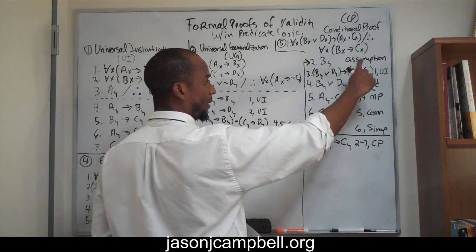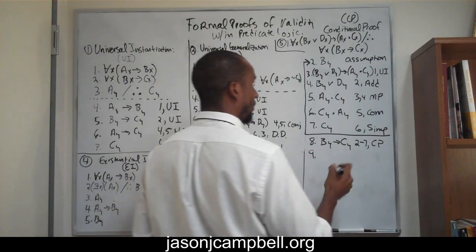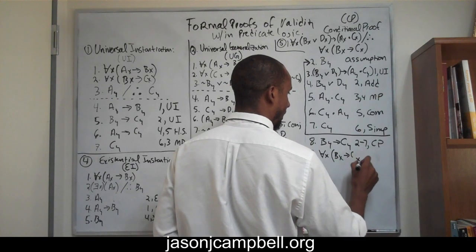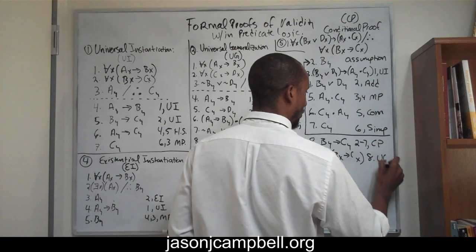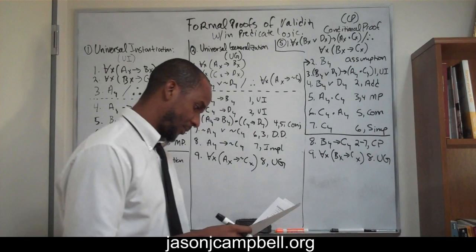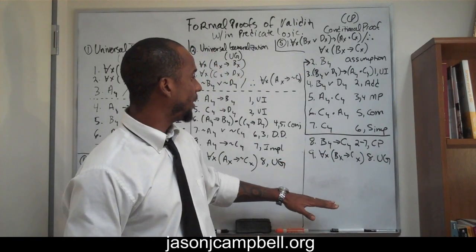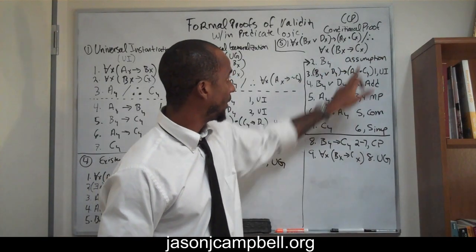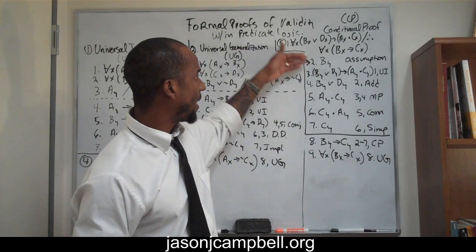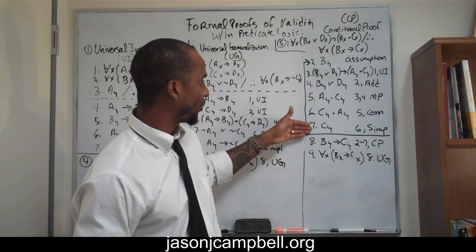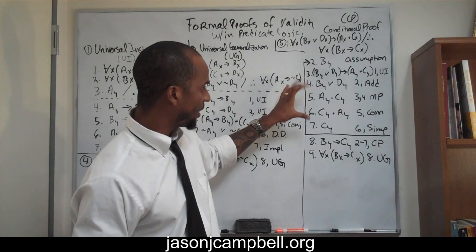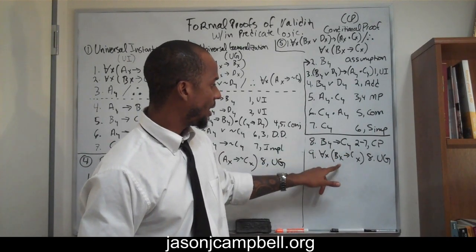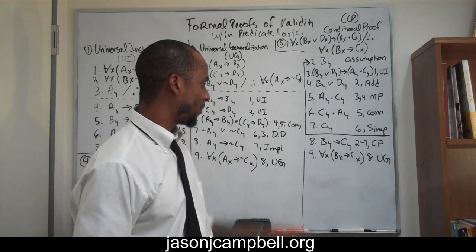My claim is a universal claim, so on line nine I have: for all X, if X is a B, then X is a C — by universal generalization on line eight. I proved my conclusion by making the assumption of B,Y. From that assumption I deduced C,Y, which allowed me to justifiably claim if Y is a B then Y is a C, and then I generalized that claim to the conclusion.